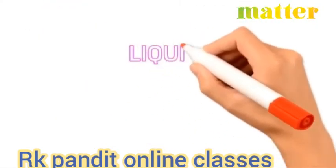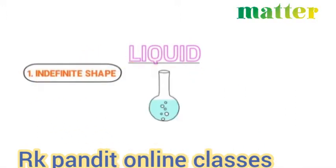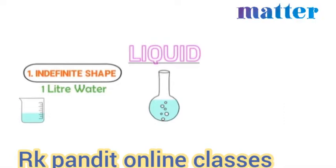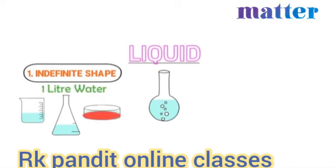Now let me teach you the second state of matter: liquids. Usually, liquids are flowing. For example, water, milk, and honey. The first property of liquid is that they have indefinite shape. Let's consider one liter of water in a beaker — the shape of the water is rectangular. If I put this water in a flask, its shape will be like a trapezium. Similarly, if I put this water in a flat object, its shape will be like a sphere or circular. Thus, we learn that the shape of liquid is changing. Therefore, we say that liquid has indefinite shape.